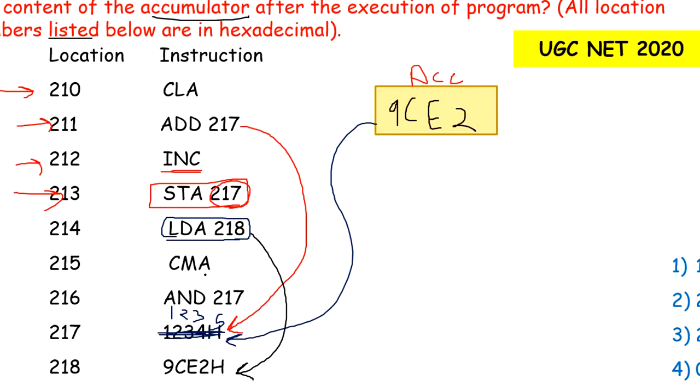Next instruction is CMA. CMA means complement your accumulator. Whatever content is in accumulator which is 9CE2, we need to find out its complement. The simple method for finding complement is first convert it to binary, then where there is 0 make it 1 and where there is 1 replace with 0, and convert back to hexadecimal. When you find the complement, you will get 631D, which you store back in the accumulator.